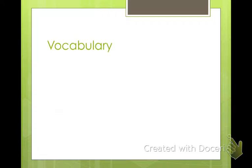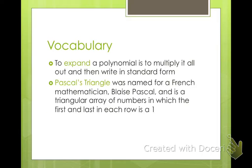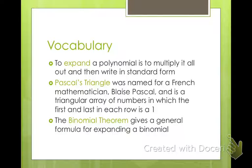To get started, we're going to go over our vocabulary. We've got three words. To expand a polynomial is to multiply it out and then write it in standard form — like x plus 2 squared, you would use the FOIL method to multiply x plus 2 times x plus 2, and that's expanding. Pascal's triangle was named for French mathematician Blaise Pascal, and it is a triangular array of numbers in which the first and last number in each row is 1. The binomial theorem gives a general formula for expanding binomials and uses Pascal's triangle, so we're going to learn Pascal's triangle first.